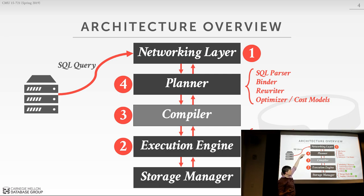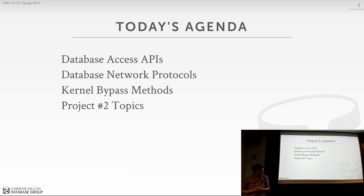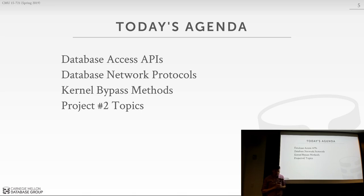For the rest of the semester at a high level: today we start with the networking layer, then we jump to the execution engine and work our way up through the execution engine, the compiler, and then the last classes will be about query optimization. In other years I've done it top-down; this year I've front-loaded some new material that didn't quite fit that hierarchy. Today's agenda: we'll spend most of our time on networking protocols and wire protocols — what they look like and why we need them. Then we'll talk about how the operating system is our enemy and kernel bypass methods. Then we'll finish talking about project two topics.